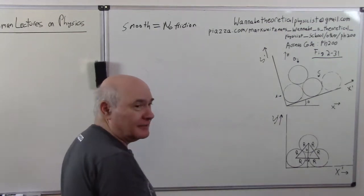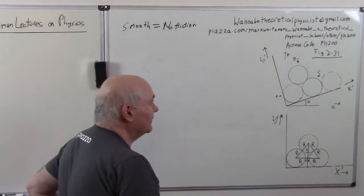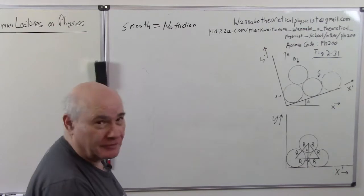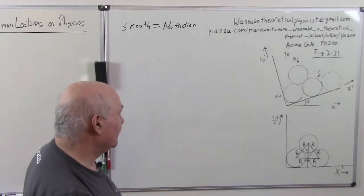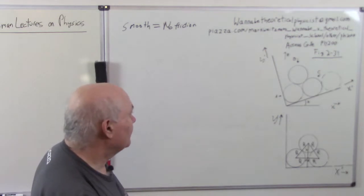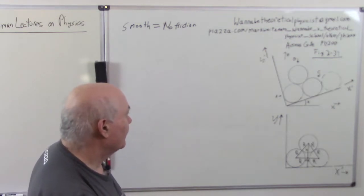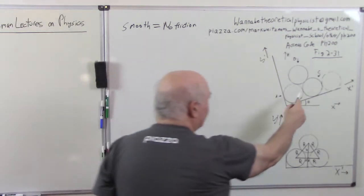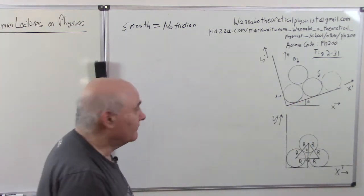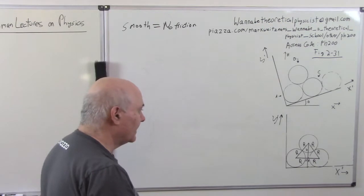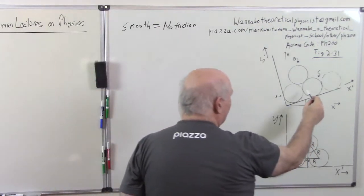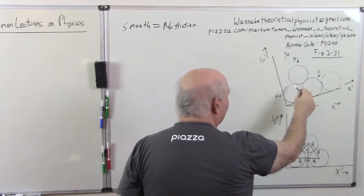So I'm going to do this problem in a way that is also solved on the Feynman Lectures on Physics website — I think there are three solutions. Mine sort of follows the third one but I think mine's even easier. The way to solve this is: sliding will begin when the potential energy of the logs goes down. So what you can imagine is one of two things could happen.